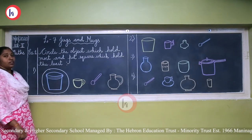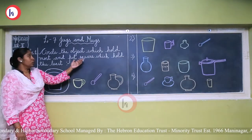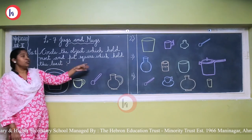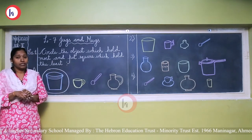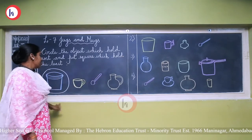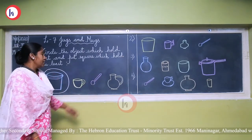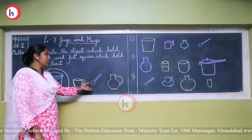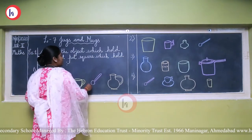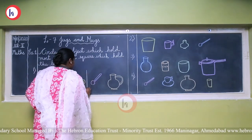Now they have also asked us to put a square on the container which holds the least — sabse kam, very less quantity. Obviously a spoon holds very less amount, so we don't circle it — we have to make a square on it, like this.